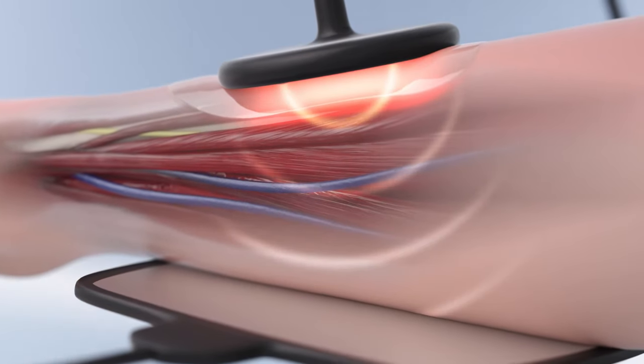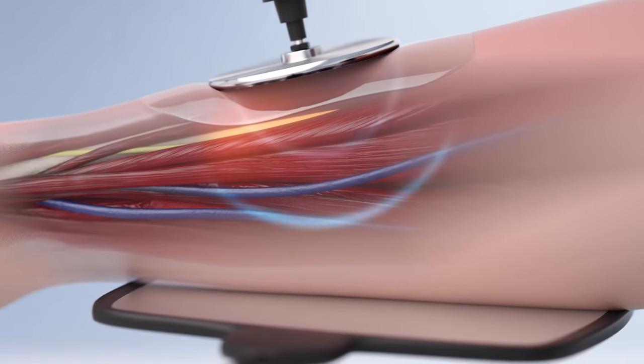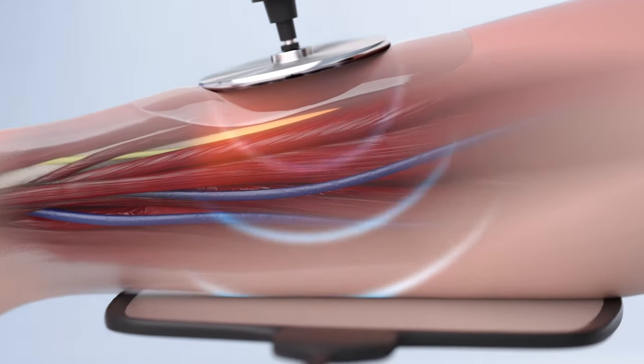The first is the capacitive mode, which works on the superficial layers of the skin. The second is the resistive mode, which has effects deeper and on the most resistive tissues such as bones, scars, or fibrotic tissues at a deeper level using high electrical resistance.